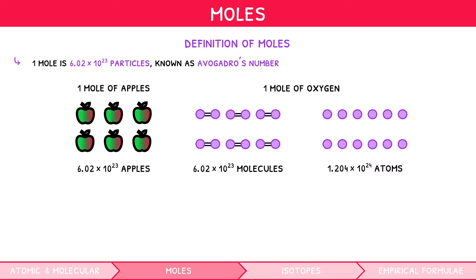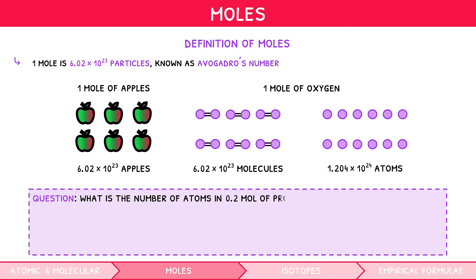Let's look at an example question. What is the number of atoms in 0.2 mole of propyne, C3H4? 0.2 moles is simply 0.2 times 6.02 times 10 to the 23. Therefore, there are 1.2 times 10 to the 23 molecules of propyne in 0.2 moles. Given that there are 7 atoms in each of these molecules, we can say that there are 7 times 1.2 times 10 to the 23 total atoms.